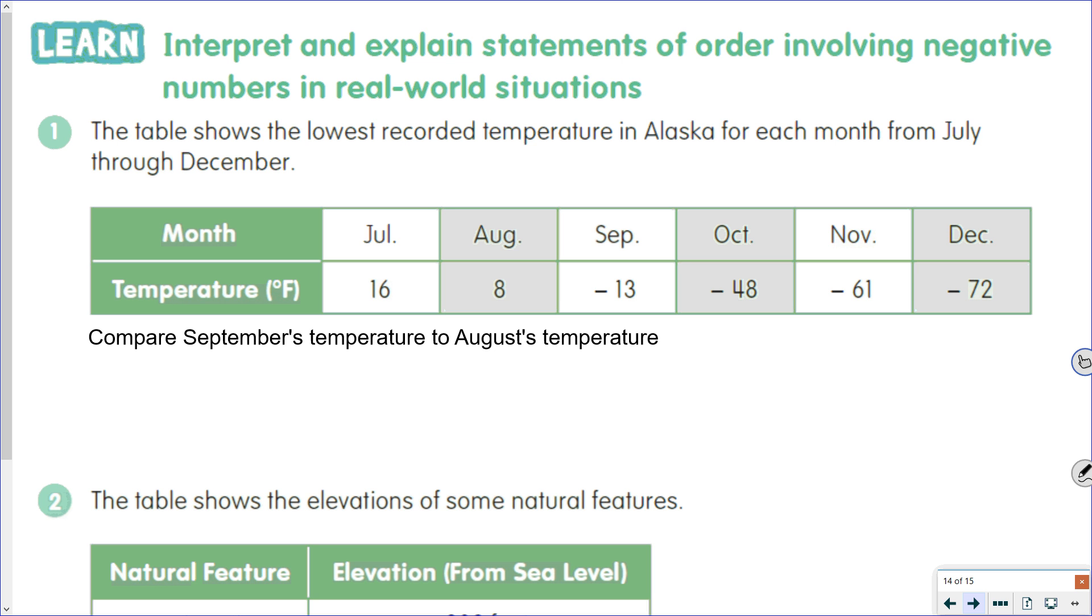Now we need to look at some situations and make sure that we're answering the question we're being asked. The table shows the lowest recorded temperature in Alaska for each month from July through December. We want to compare September's temperature to August's temperature. Since September is listed first, we put that number first, so that's negative 13.